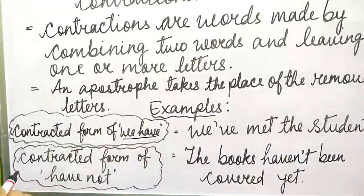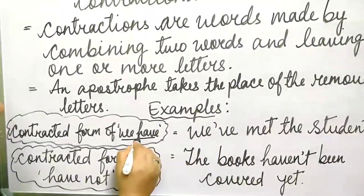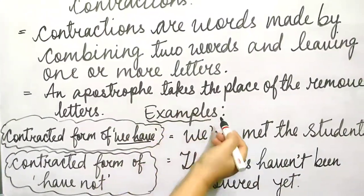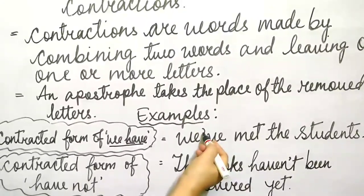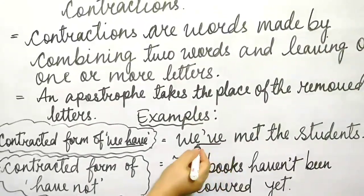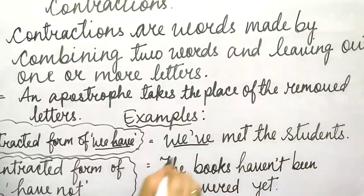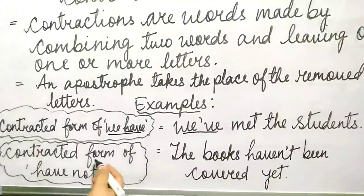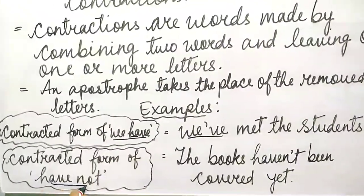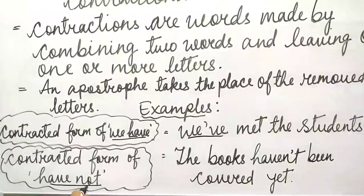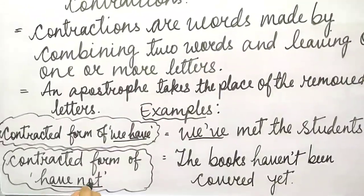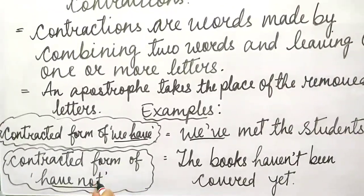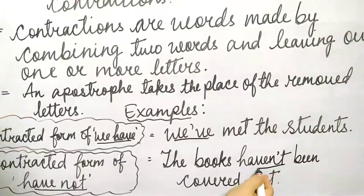How do we write it? We have — the 'ha' is removed and an apostrophe takes the place of the removed letters, so we make it the short form: we've. The books haven't been covered yet — contracted form of 'have not.' The 'o' is removed from 'not' and apostrophe is placed. So we write 'haven't.'